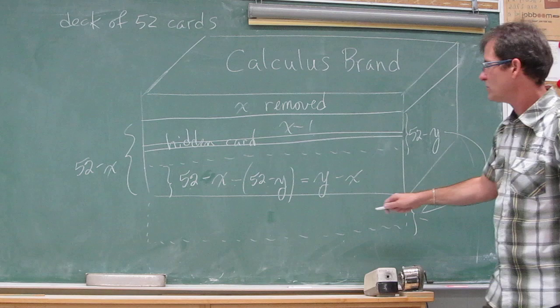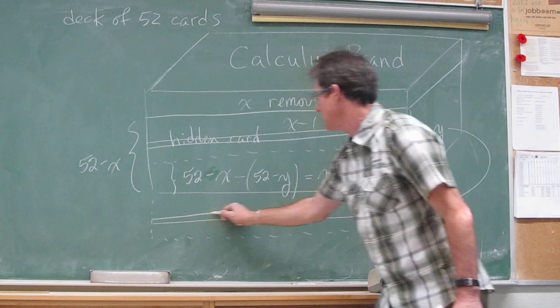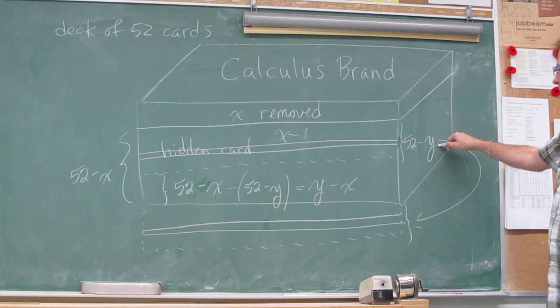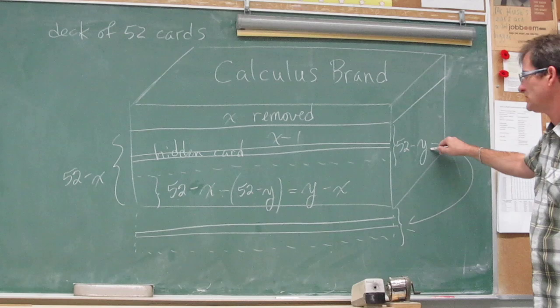And then, of course, the hidden card was also moved down. Because it moved with those 52 minus X cards. It's 52 minus Y cards. That's why I made sure Y was—I should have made it no bigger than 42. And he picked 40, so we were okay. So there's the hidden card.